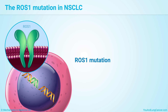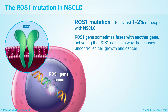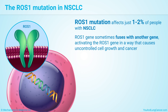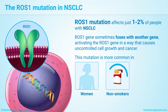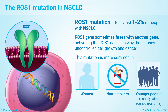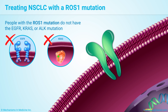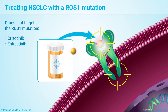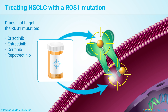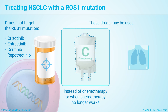A mutation in a gene called ROS1 affects just 1 or 2% of people with non-small cell lung cancer. The ROS1 gene sometimes fuses with another gene, activating the ROS1 gene in a way that causes uncontrolled cell growth and cancer. This mutation is more common in women, non-smokers, and younger people, usually with adenocarcinoma. People with the ROS1 mutation do not have the EGFR, KRAS, or ALK mutation. Drugs that target the ROS1 mutation include cruzotinib, trectinib, seritinib, and repotrectinib. These may be used instead of chemotherapy when chemo no longer works or if cancer has spread.